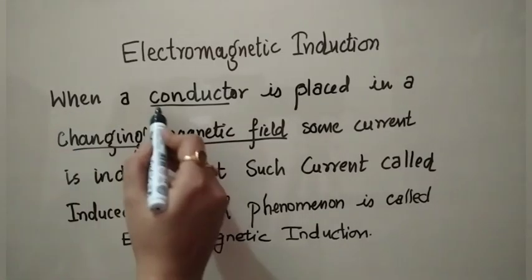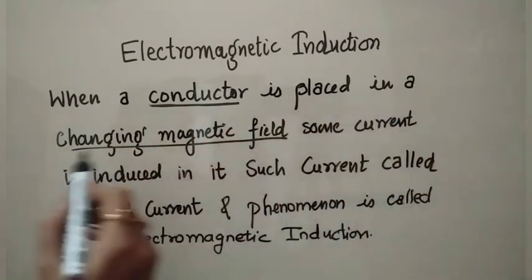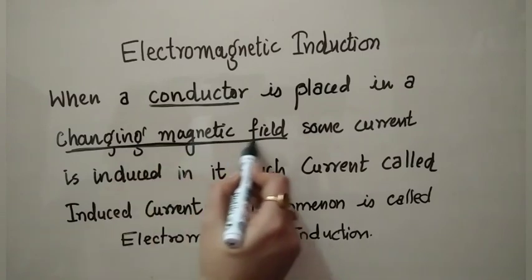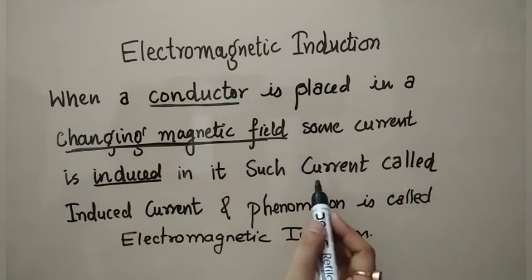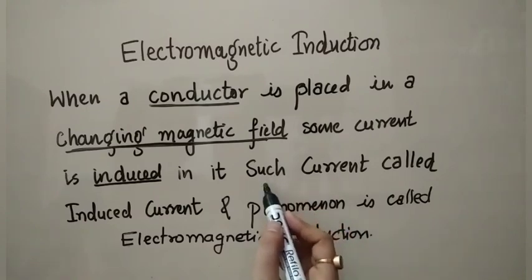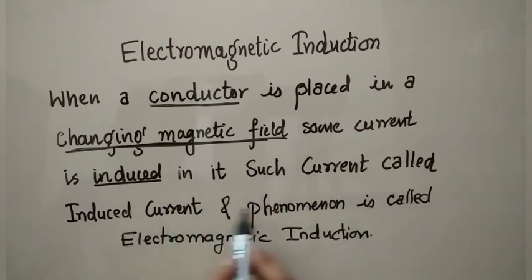What we have learned in this video: When a conductor is placed in changing magnetic field, then some current is induced. Such current is called induced current and the phenomenon is called electromagnetic induction.